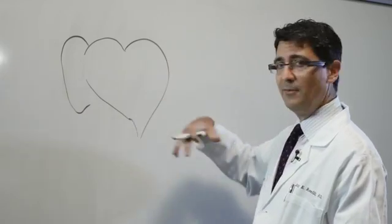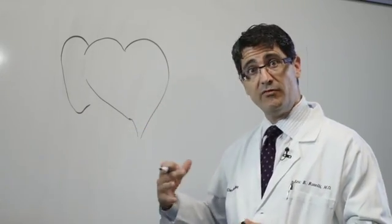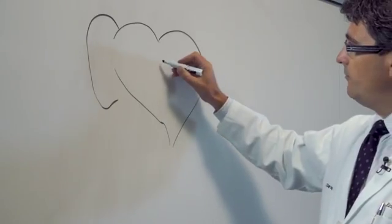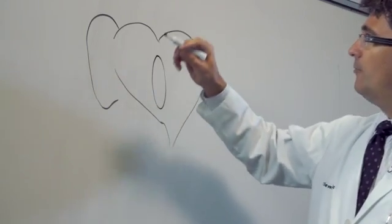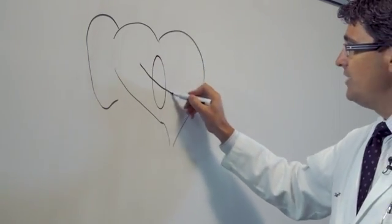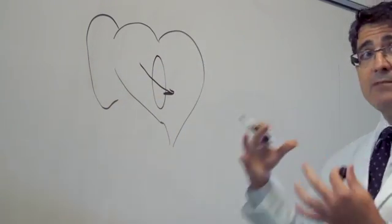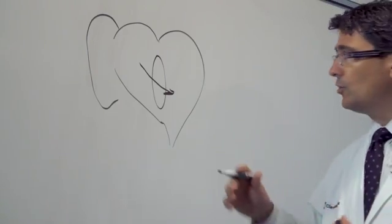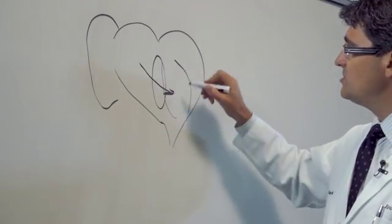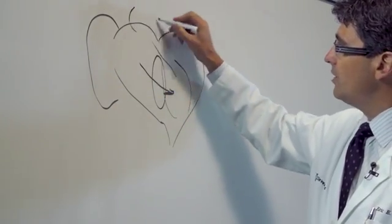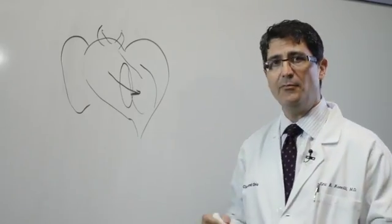After the blood picks up fresh oxygen in the lungs and gets rid of carbon dioxide, the blood flow comes back from the lungs and goes through the mitral valve into the main pumping chamber of the heart, the left ventricle, before that blood flow is sent through the aortic valve and out to the rest of the body.